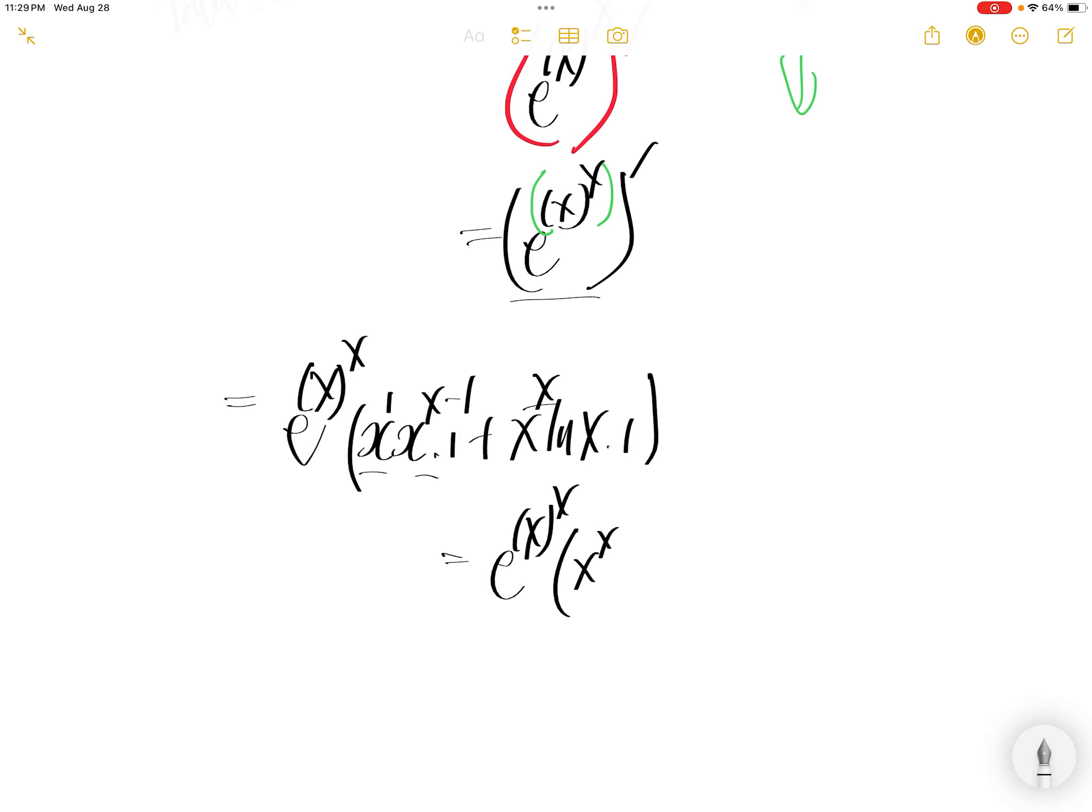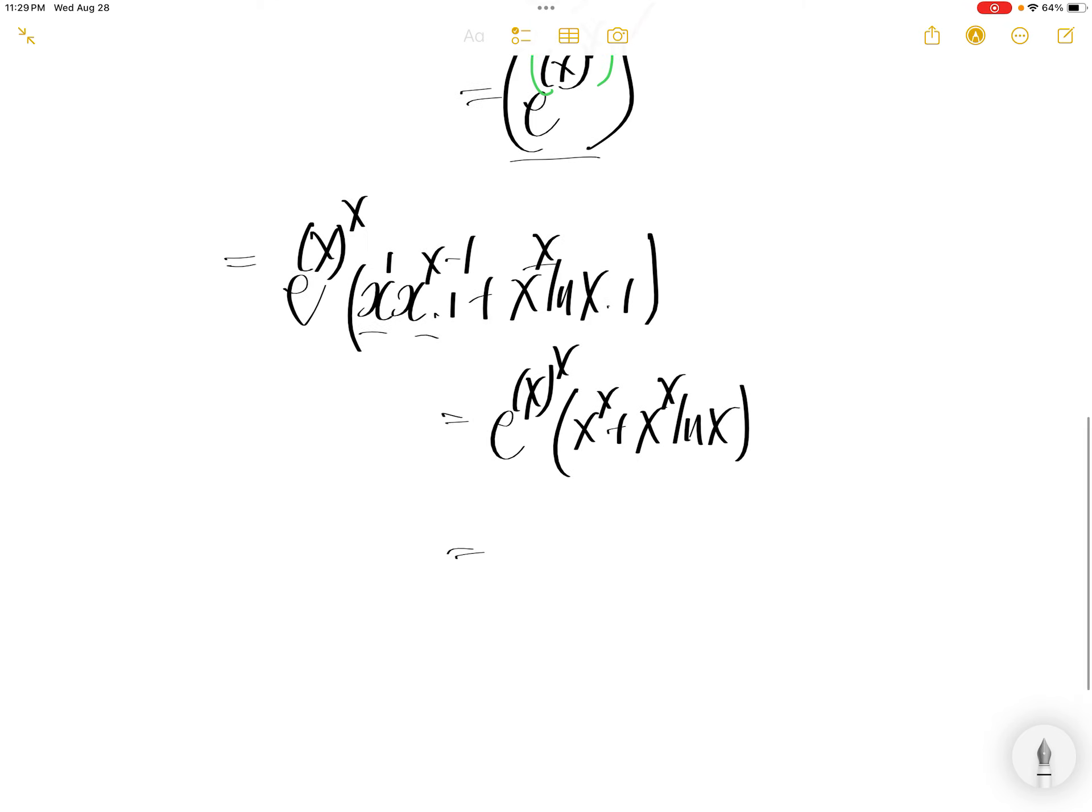And then e to the power of x. You can simplify this. There's a 1 here. 1 minus 1 is 0. And then you have x to the power of x plus x to the power of x ln x. And then factor out the x to the power of x. You have x to the power of x times (1 plus ln x).